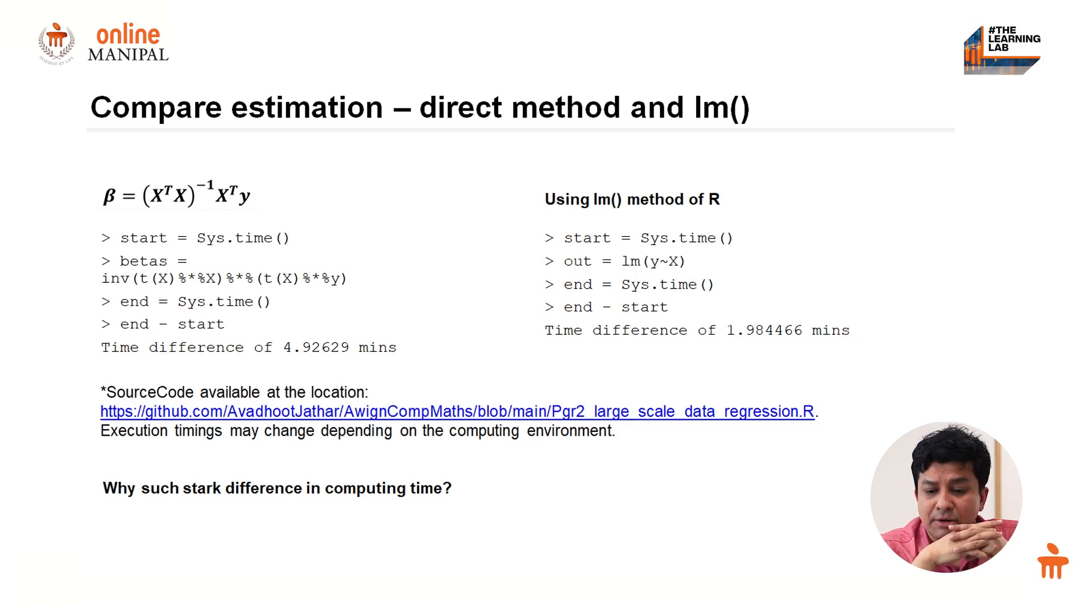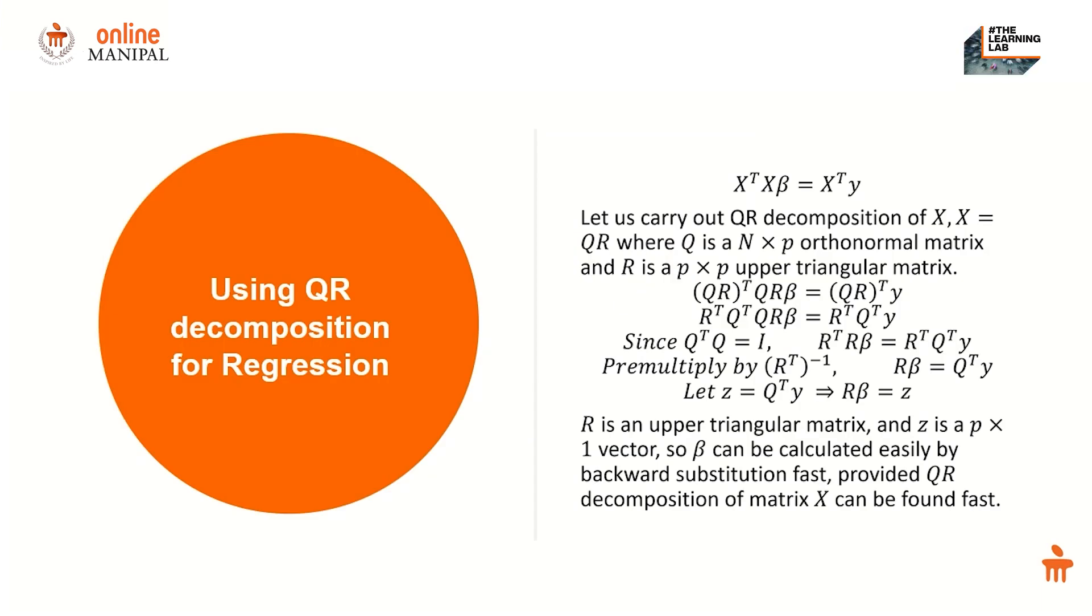This ties to the way statistical packages or Python packages typically estimate regression models as opposed to doing direct computation. You have learned the concept of QR decomposition with matrices. Let us re-examine QR decomposition for our regression problem. I wrote beta equals x prime x inverse x prime y. Let us multiply x prime x on both sides, so we have x prime x beta equals x transpose y.